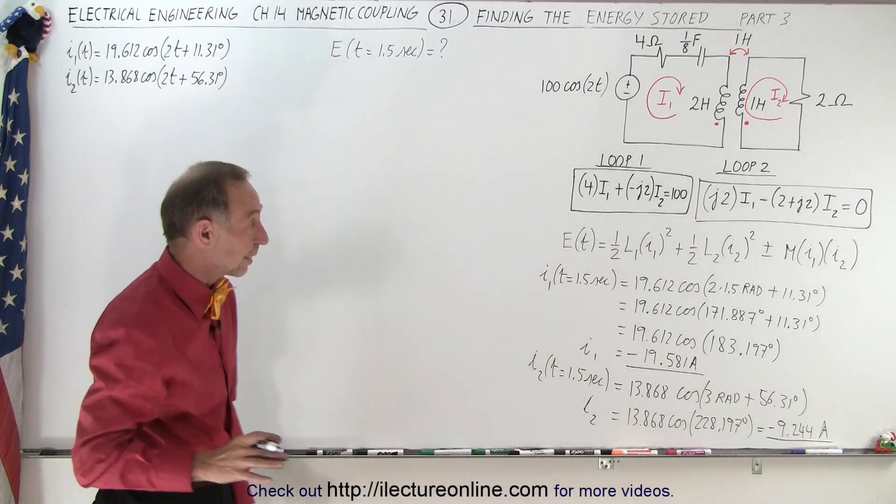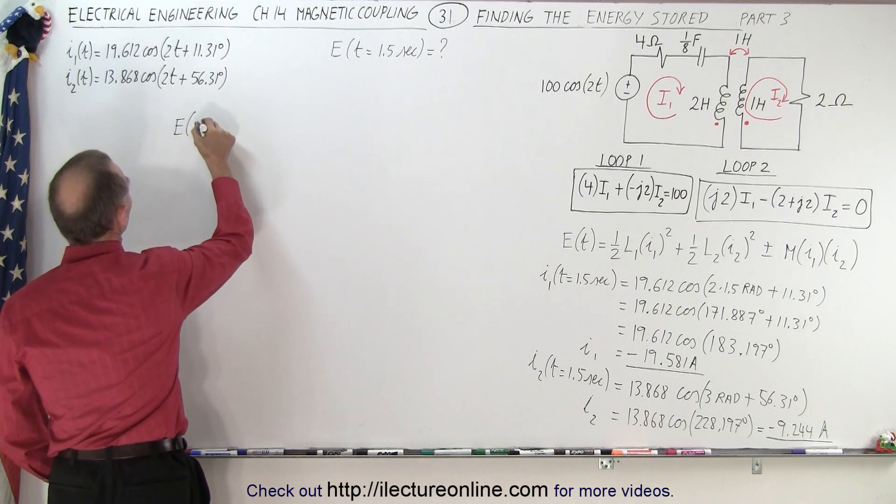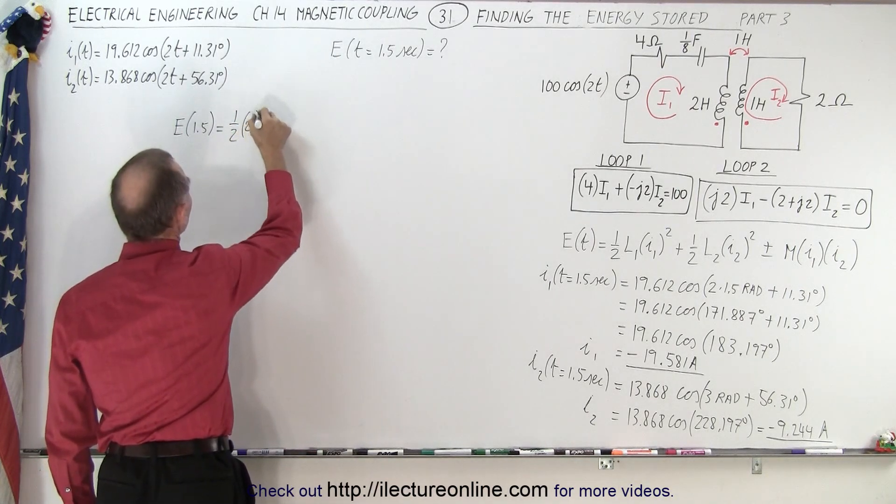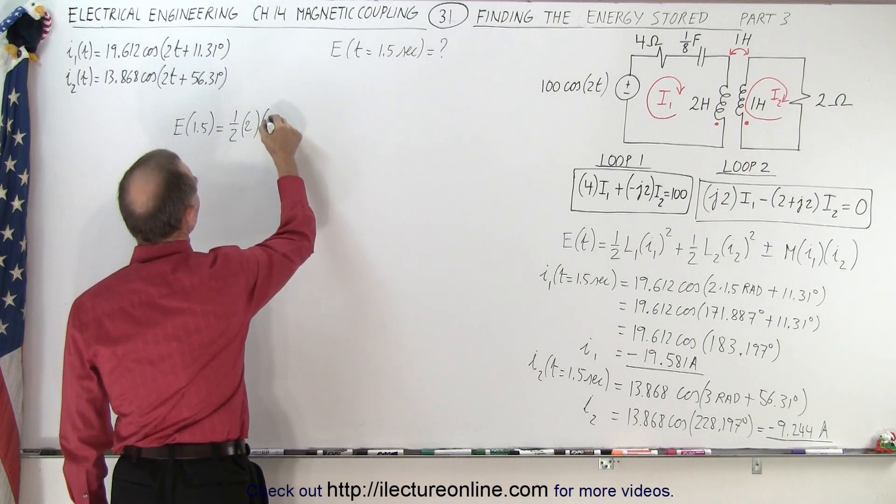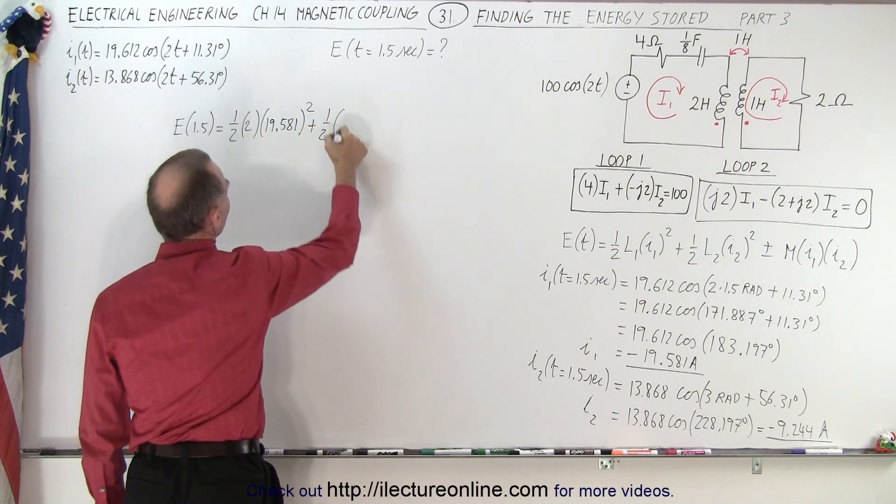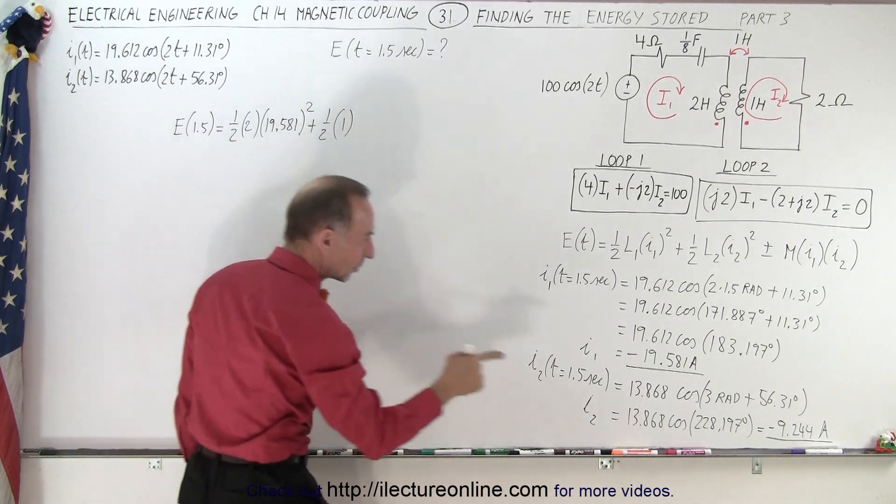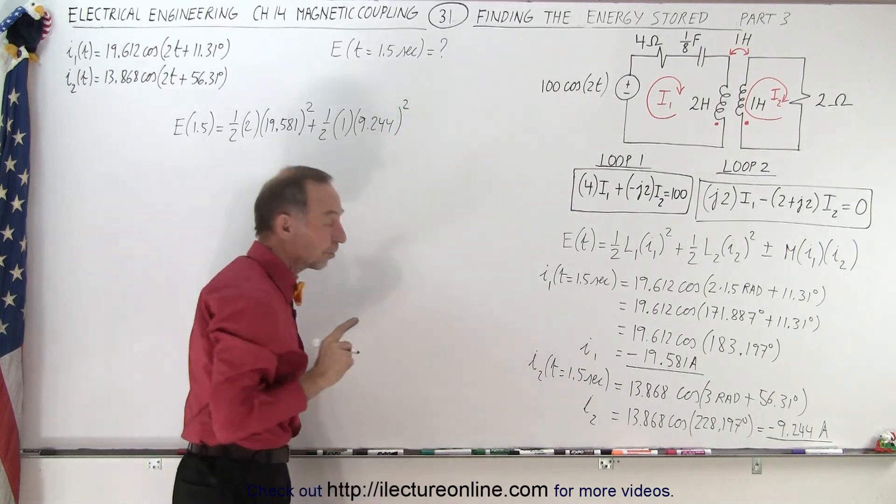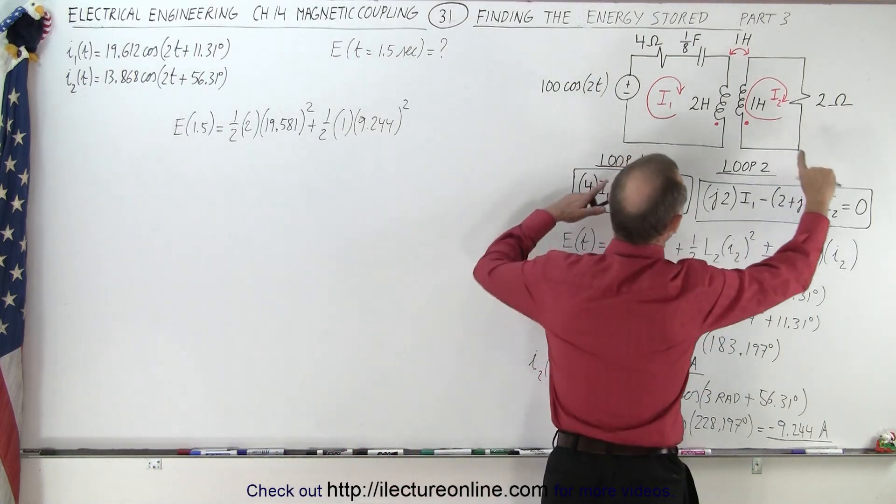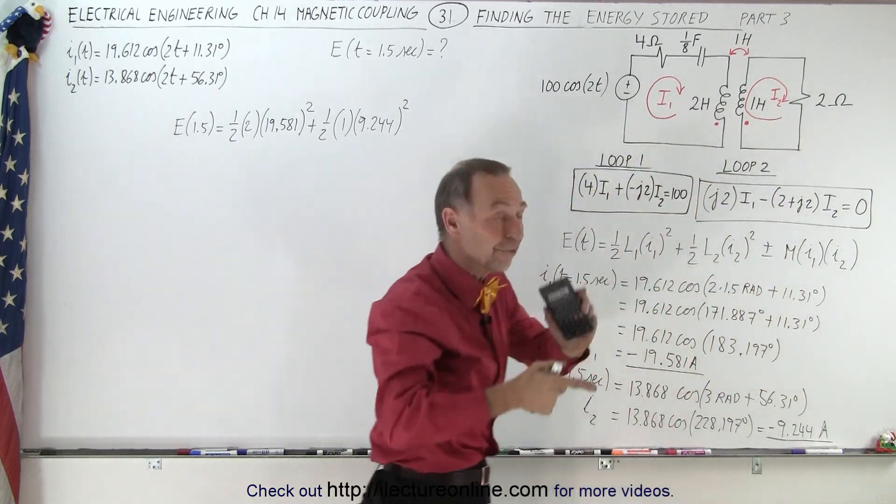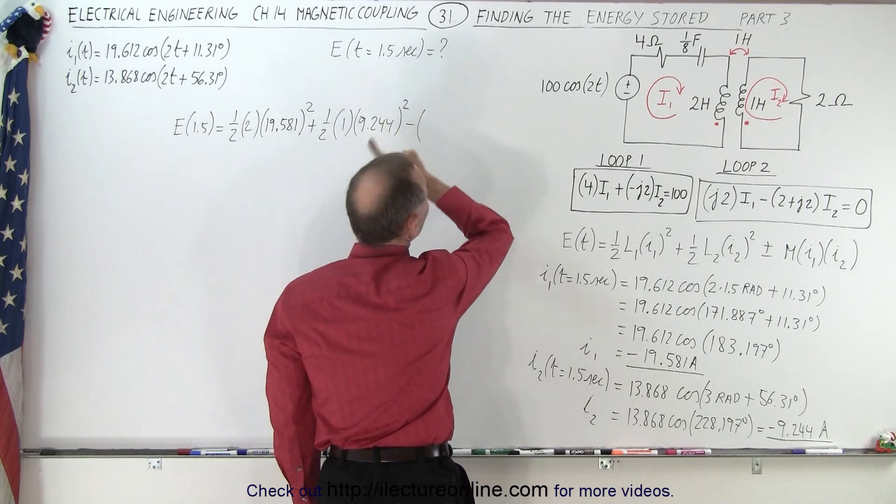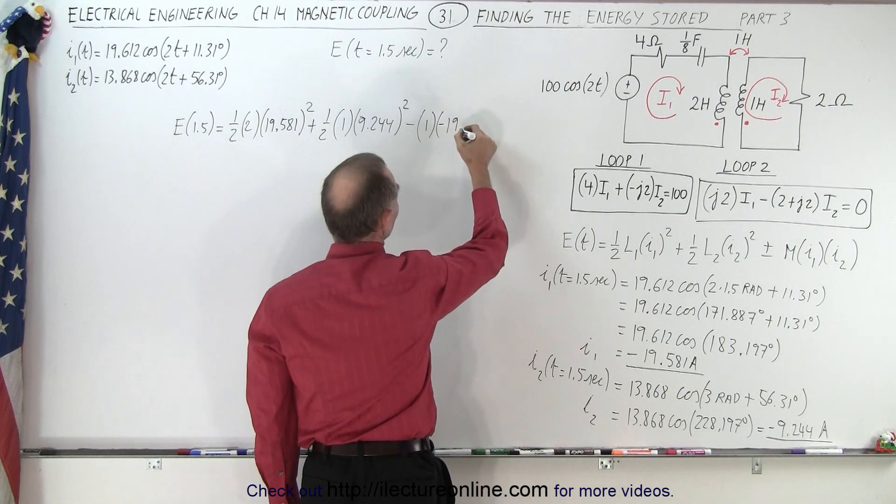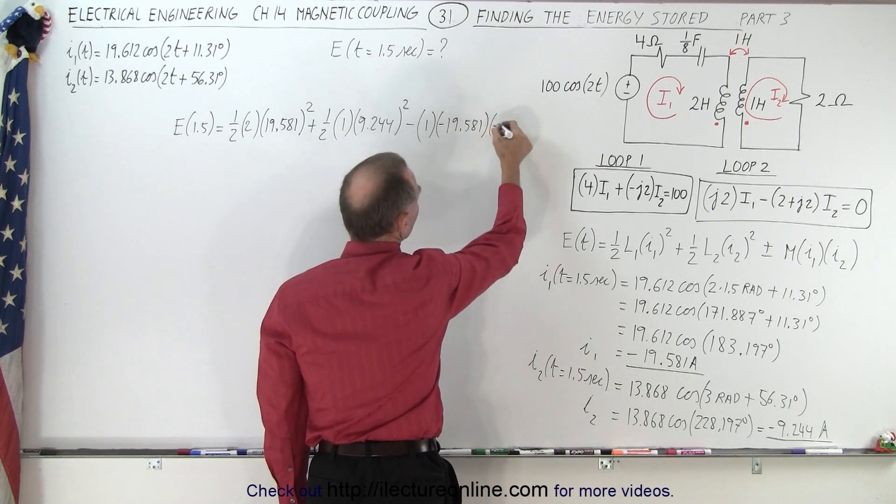So now that we have the values for I1 and I2, I can plug those in the equation to find the energy. So energy at 1.5 seconds is equal to one-half times 2 henries times I1 squared, which is 19.581 squared, plus one-half times 1 henry times 9.244 squared. Now, is it plus or minus? Remember, it's plus if they both enter the inductor on the same side, on the dot side or the non-dot side, but here they enter on different sides, so that becomes a minus. The mutual coupling or magnetic coupling of 1 henry times the two currents, they're both negative currents, so make sure we put in the correct sign, so 19.581 and negative 9.244.